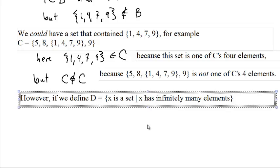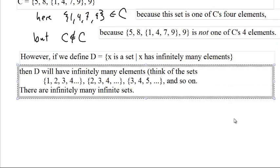Anyway, but we could, using set builder notation, refer to such an object. We could say D is the set of all sets such that the set has infinitely many elements. And if you think about it, this set D will itself have infinitely many elements.